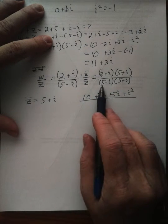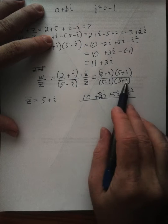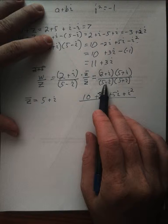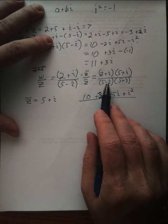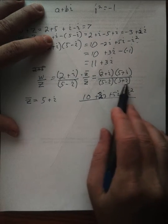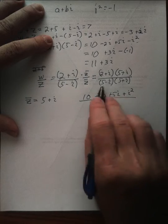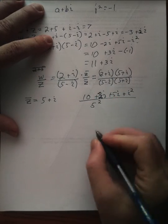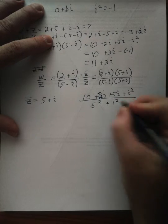Now, at the bottom, you can FOIL this out. But because this is a difference of squares from complex conjugates, what you end up with is a sum of squares. The second term will be minus i squared, which will be plus 1. So when you're doing complex conjugates, you should just go straight to 5 squared plus 1 squared.